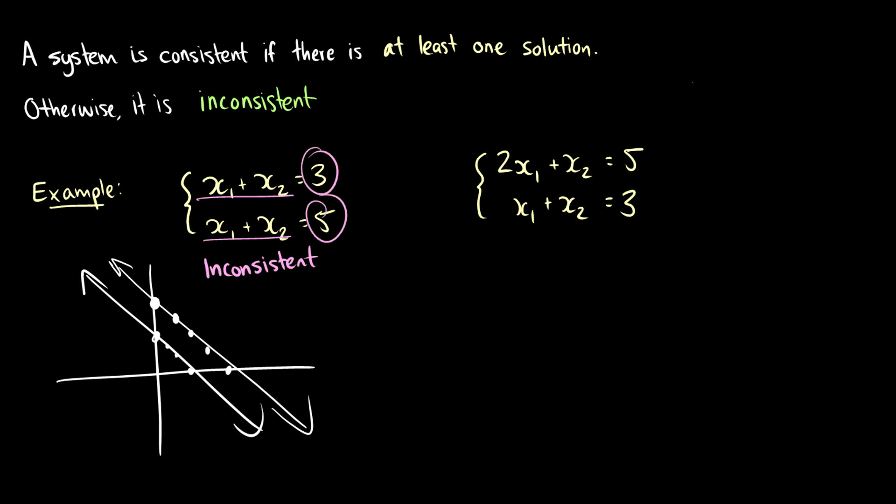Now this over here, 2x1 plus x2 is equal to 5, x1 plus x2 is equal to 3. We can solve for a solution here. So what we can do is we can subtract the second equation from the first and we can get x1 is equal to 2. So 2x1 minus x1 is x1, x2 minus x2 is 0, 5 minus 3 is 2. So if our x1 is equal to 2, then that means that x2 is equal to 1. So we can find explicit solutions.